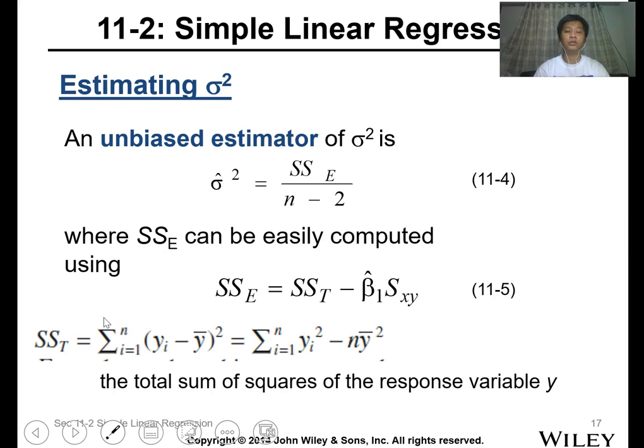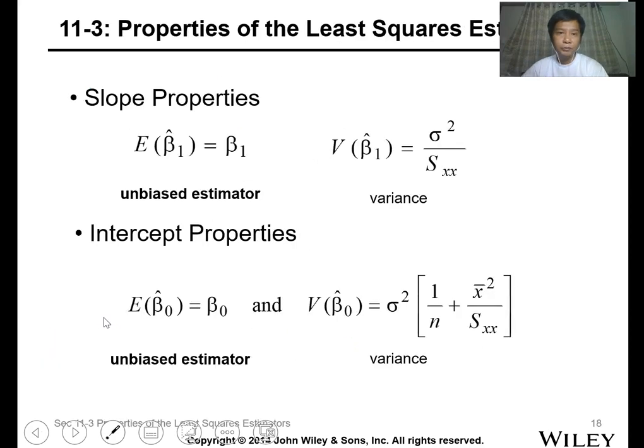The expected value for the slope is just your slope, which is the unbiased estimator, and the variance for the slope calculation is equal to this one, sigma squared over your S_xx.